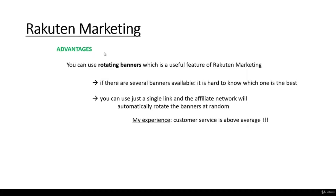Another good feature of Rakuten Marketing is the so-called rotating banners. If there are several banners available, it is hard to know which one is the best. With the rotating banners feature, you can use just a single link and the affiliate network will automatically rotate the banners at random. I have never personally used this rotating banners feature — I use Rakuten Marketing mainly because I can affiliate Udemy-related courses. My experience is that the customer service is above average; they replied within hours and were extremely helpful.